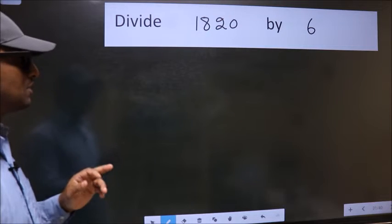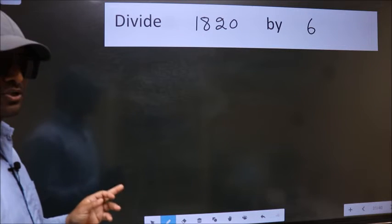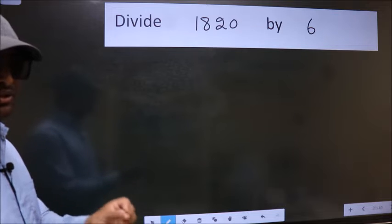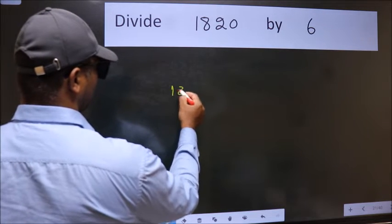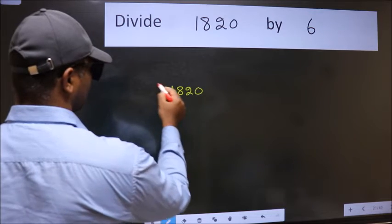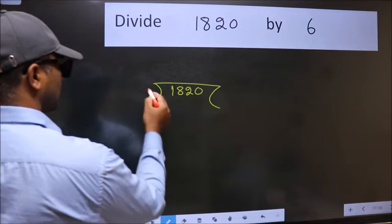Divide 1820 by 6. To do this division, we should frame it in this way. 1820 here, 6 here.